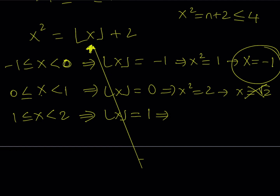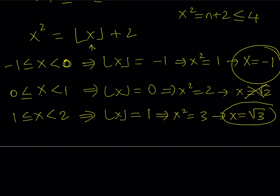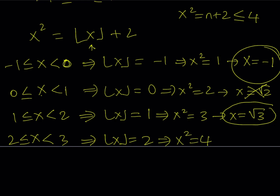If x is between 1 and 2 (2 not included), the floor value is 1. Substituting, x squared equals 1 plus 2 equals 3, so x equals square root of 3 or negative square root of 3. Since x must be between 1 and 2, only square root of 3 is valid — it counts. Next, if x is between 2 and 3, the floor value is 2, giving x squared equals 4, so x equals plus or minus 2. Negative 2 does not fall in that interval, so the only valid solution is x equals 2.